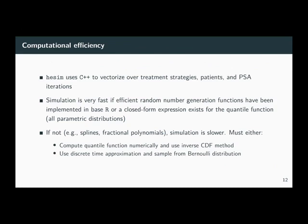Computational efficiency is an important consideration for us. The way we make it fast is by programming the core code in C++, which means we're vectorizing — looping over the treatment strategies, the patients, and the PSA iterations at the C++ level rather than the R level. In general, the simulation is quite fast if efficient random number generation functions have already been created, which is true for most of the base R parametric distributions.